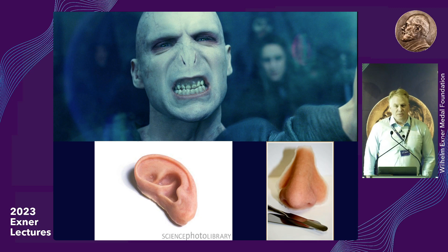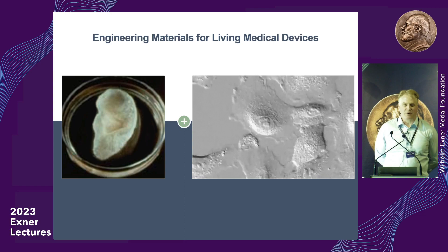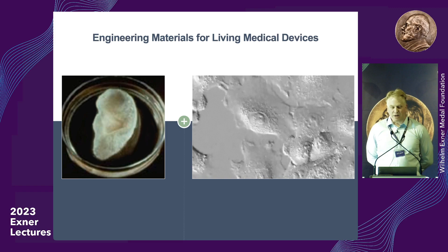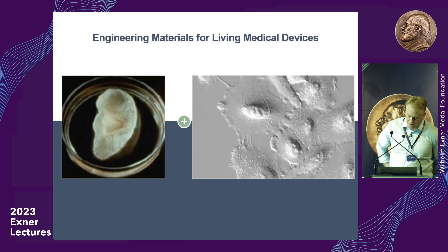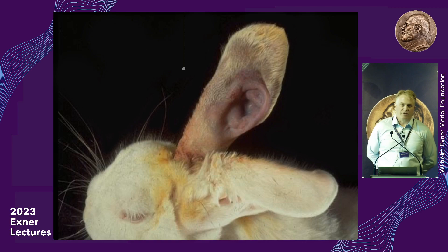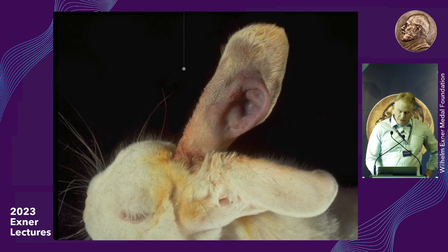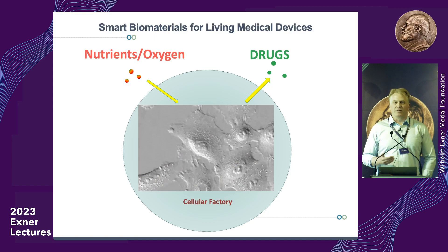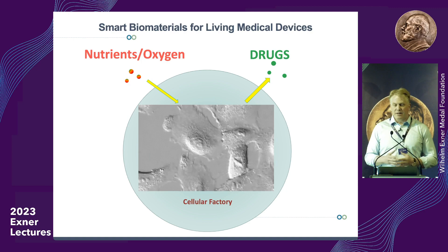The field of tissue engineering has been working on problems like this for a long time. One famous example is an ear made of biodegradable polymers combined with living cells — in this case chondrocytes from cartilage — which under the right conditions can be grown into mimetics of cartilage and placed into animals and even people. The part I'd like to focus on is our work on building what we think of as living medical devices that deliver drugs on demand.